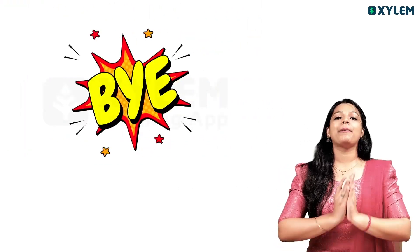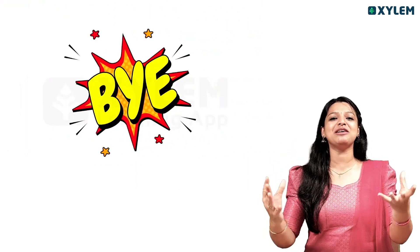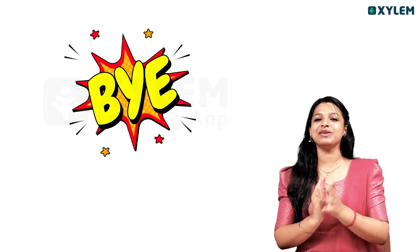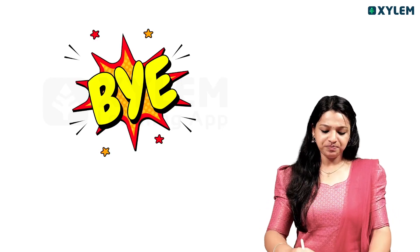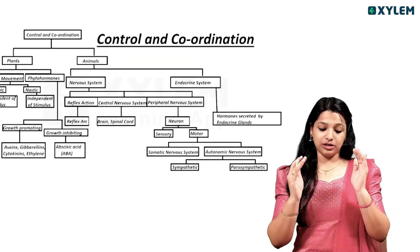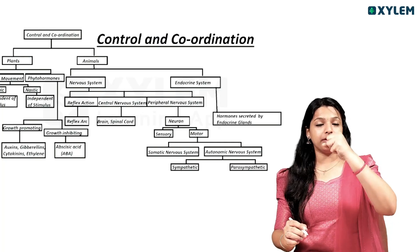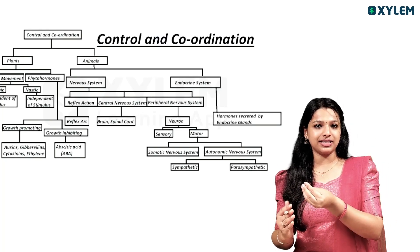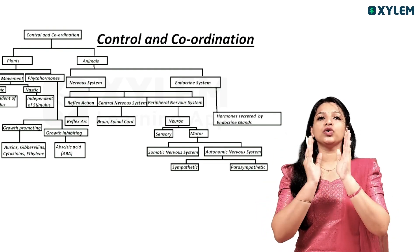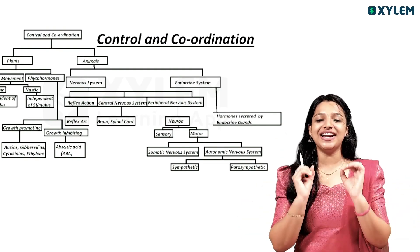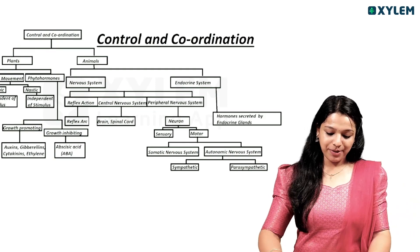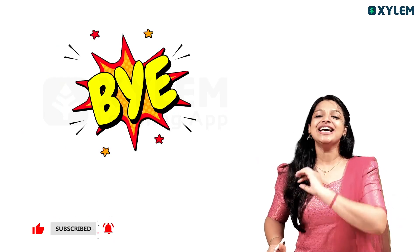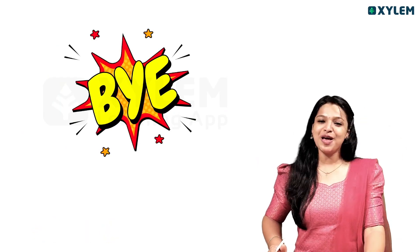If you have already studied these things, this is the first chapter and it is very simple. In this chapter we will learn a flow chart about control and coordination: plants, animals, neurons, sensory, motor. That's why we're going to learn a short story. If you want to watch the videos, we'll prepare for the exam. Bye-bye!